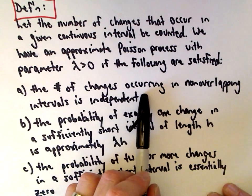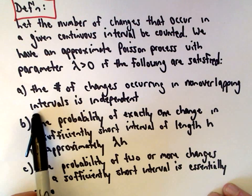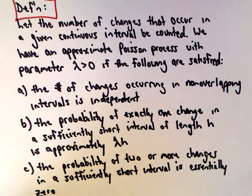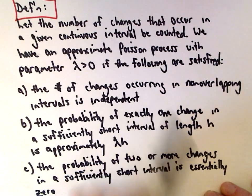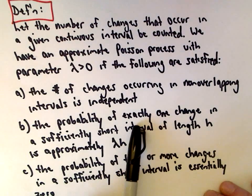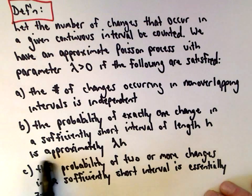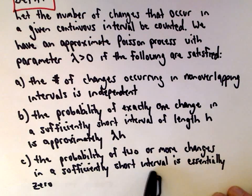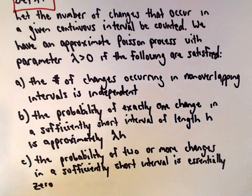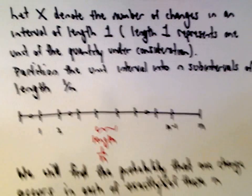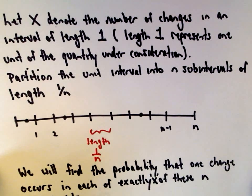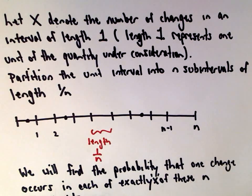The number of changes occurring in non-overlapping intervals is independent. So the number of phone calls coming in between 10 o'clock and noon has no bearing on the number coming in between 5 and 6 o'clock. The probability of exactly one change in a sufficiently short interval of length h is approximately lambda times h. And the probability of two or more changes in a sufficiently short interval is essentially zero — you can get at most one change in any interval. This is technically an approximate Poisson process, but it avoids more complicated mathematics, and the results all hold.